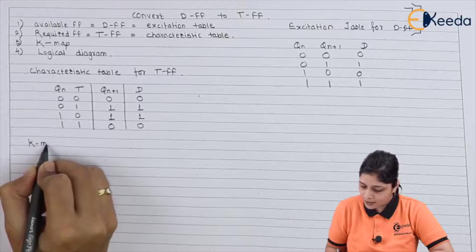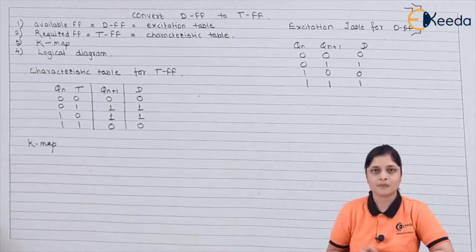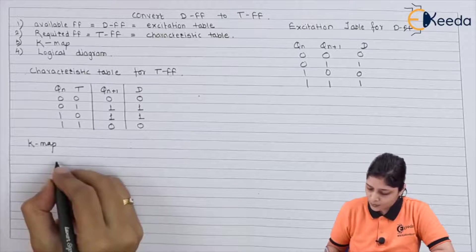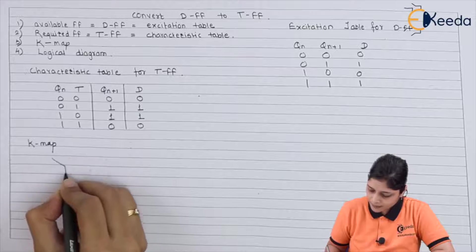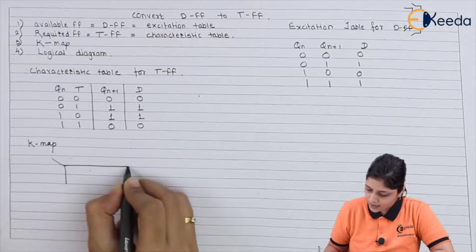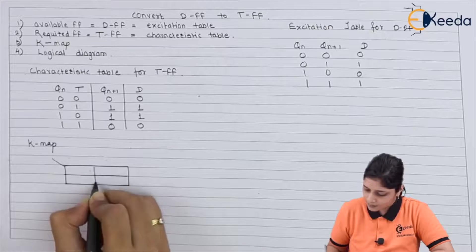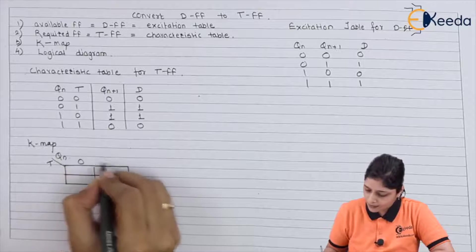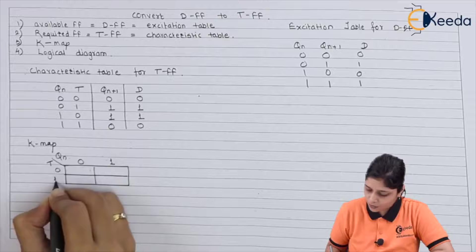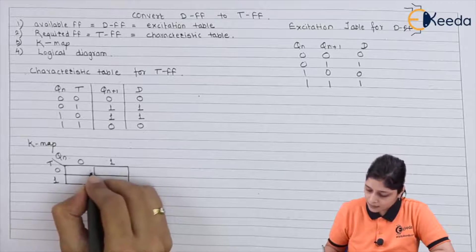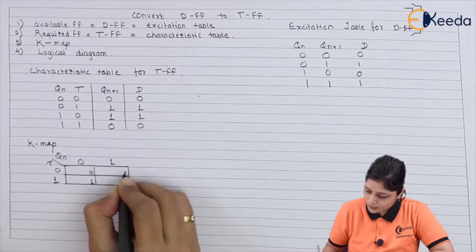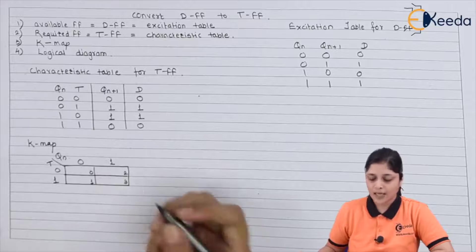Now, the K-map consists of inputs Qn and T. Here you will write 0 1, 0 1. Inside the boxes, you can write 0 1 2 3, and for D, this is for D.